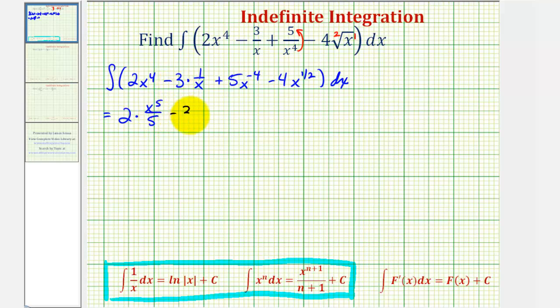Then we'll have -3 times the antiderivative of 1 over x, which is natural log absolute value of x.